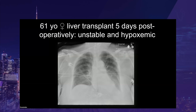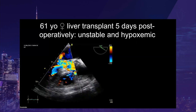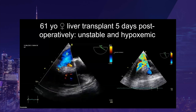On her chest x-ray, you can see some pulmonary edema and some atelectasis. However, we do not understand why she's unstable. Because of her obesity, we do not have a good answer using surface ultrasound, which is always the first step. So we performed a transesophageal echocardiography. What we see is a very hyperdynamic heart with left ventricular outflow tract obstruction, and the mitral regurgitation could contribute to the pulmonary edema.